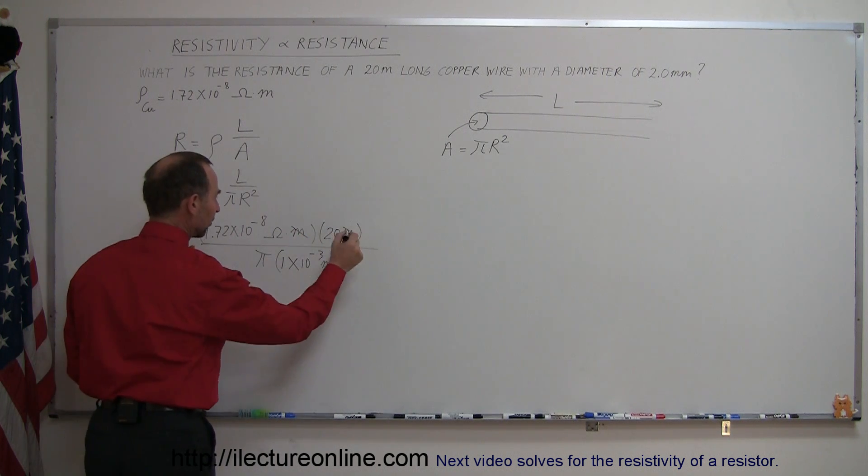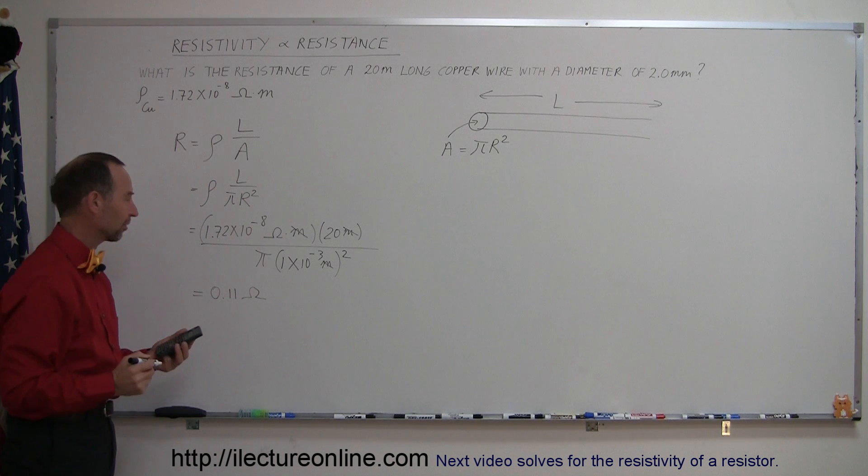Notice that we have meters and meters in the numerator and meters squared in the denominator, so those cancel out.